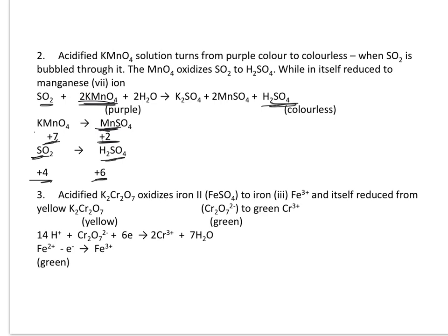Another example is acidified K₂Cr₂O₇, which oxidizes iron(II) ions in FeSO₄ to iron(III) salt — from Fe²⁺ to Fe³⁺. K₂Cr₂O₇ itself is reduced to Cr³⁺, and this redox reaction is detected by a color change from yellow to green. The half-equation is: 14H⁺ + Cr₂O₇²⁻ + 6e⁻ → 2Cr³⁺ + 7H₂O. For iron: Fe²⁺ loses one electron to give Fe³⁺, so iron is oxidized from +2 to +3. Fe²⁺ is green in color.